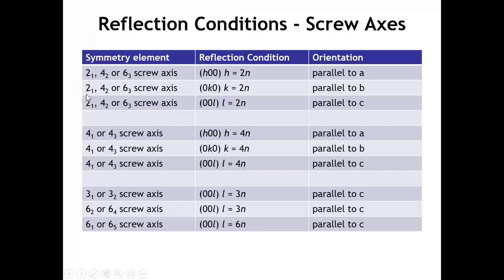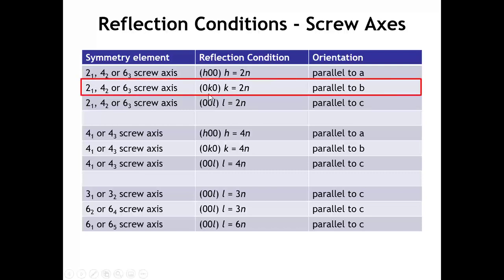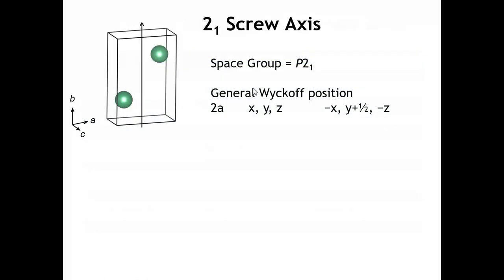We're going to look at a crystal that has a 2 sub 1 screw axis parallel to the b axis. The reflection condition for this kind of crystal is that the 0k0 peaks are only allowed when k is an even number. To keep it as simple as possible, let's look at the lowest symmetry space group that has a 2 sub 1 screw — the monoclinic space group P2 sub 1. Looking at the Wyckoff sites, there are no special positions, only the general position with a multiplicity of 2. The coordinates of those two atoms are x, y, z and x̄, y plus 1/2, z̄.